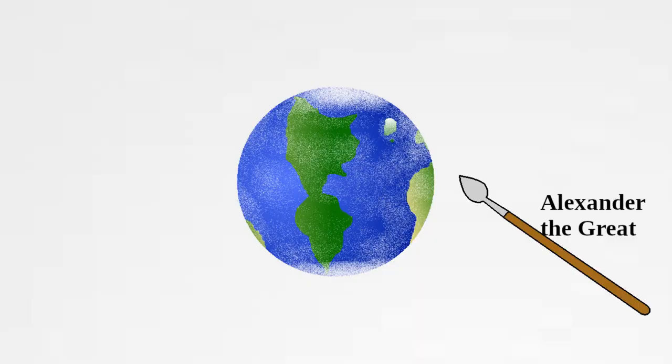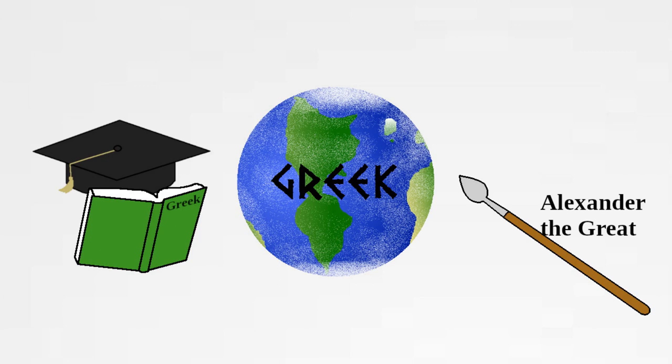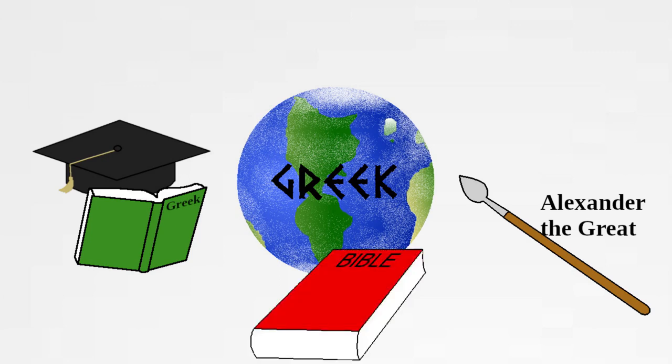This is because Alexander the Great had conquered huge sections of the world sometime before, spreading the Greek language and cultural influence everywhere. Educated people everywhere knew how to read Greek, so it was the best possible language to write the teachings of Jesus in.